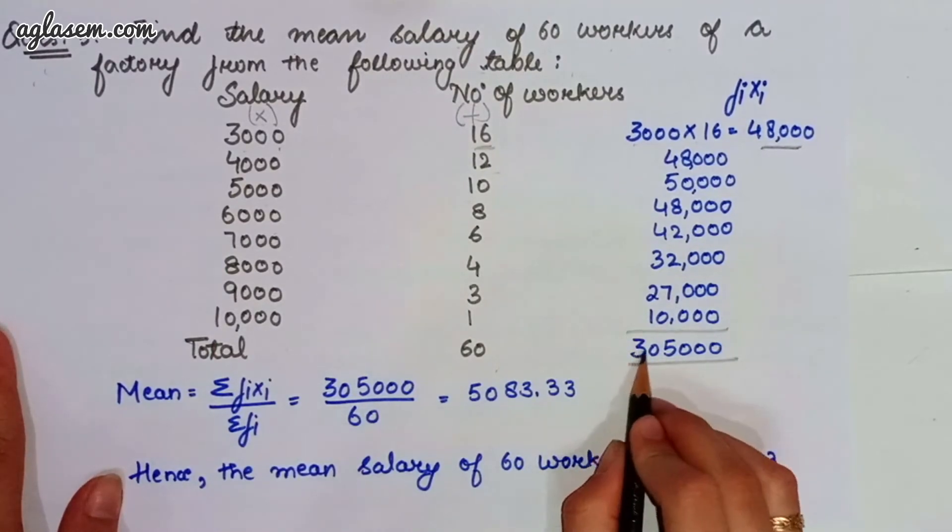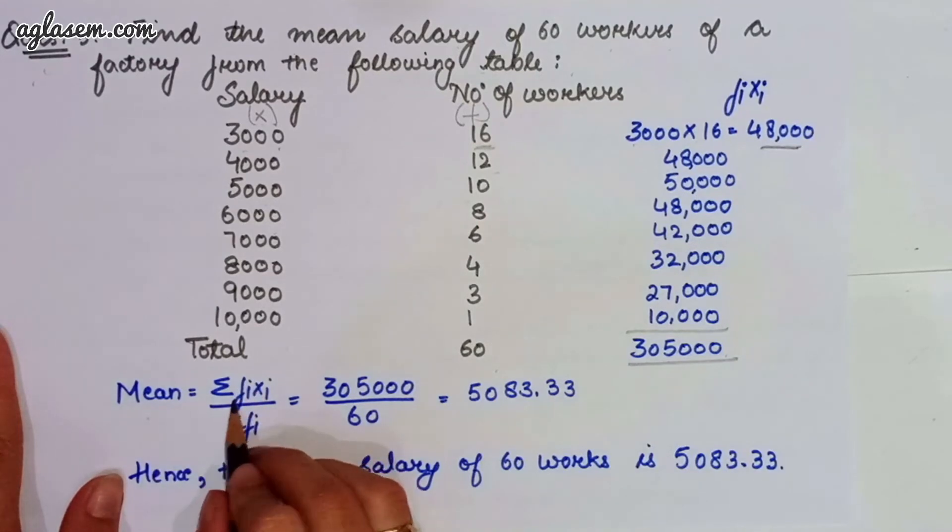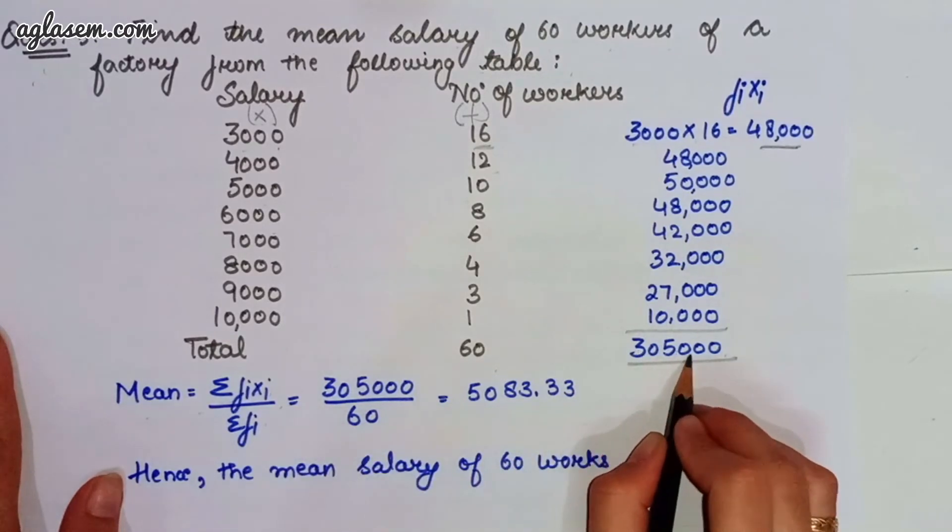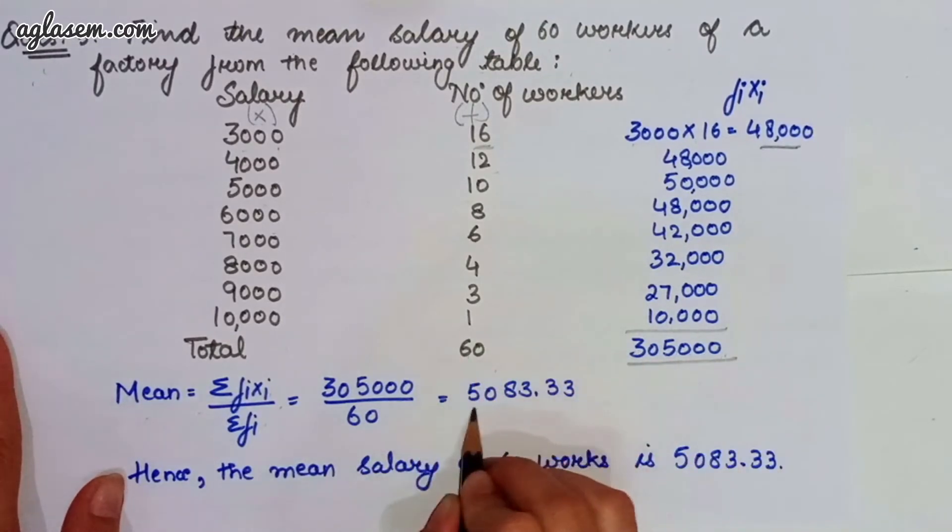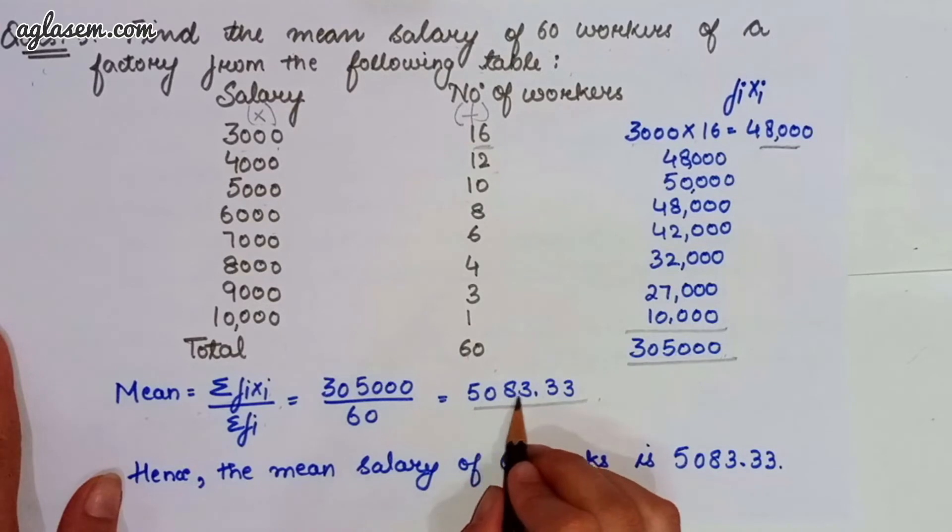So, total we can find it as 30,500, so mean that is summation f1 into x1 divided by summation f1, that is 35, 30,500 divided by 60, which will give you 5083.33. So, the mean salary of 60 workers is 5083.33.